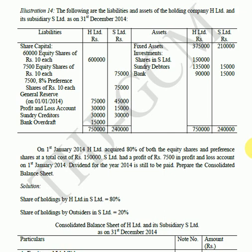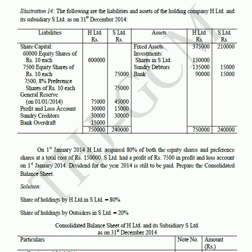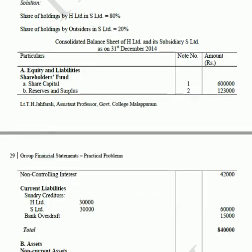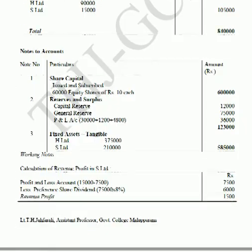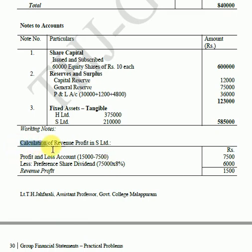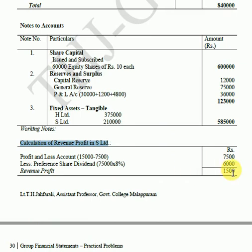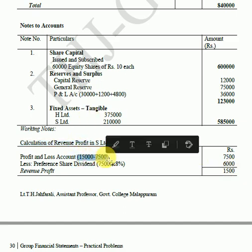Now we compute the revenue profit in S Limited. The proportion of S Limited shareholdings: 20% belongs to outside shareholders. The profit and loss account balance in S Limited is Rs.15,000. The revenue profit is Rs.7,500 rupees, which is the profit earned after the date of acquisition.